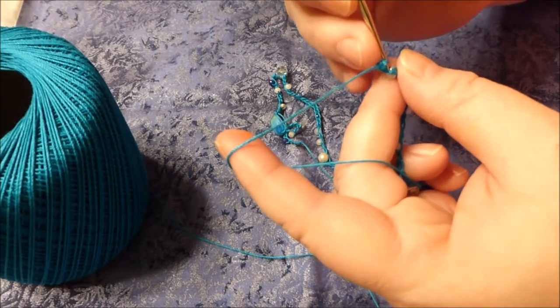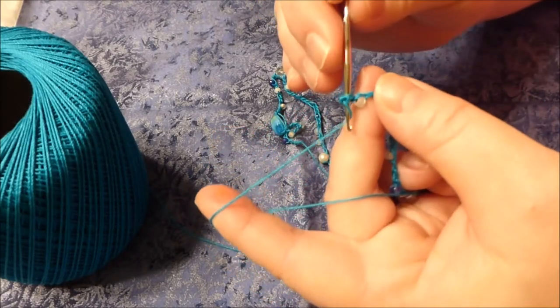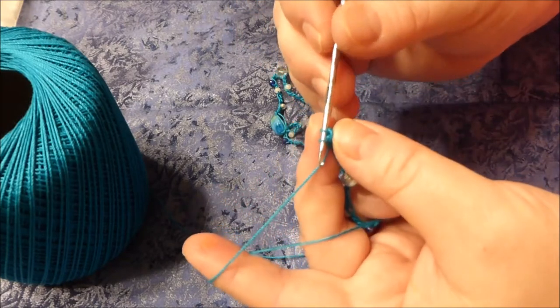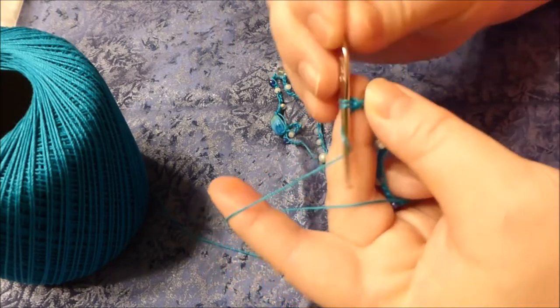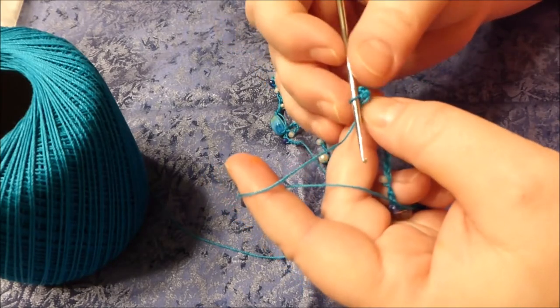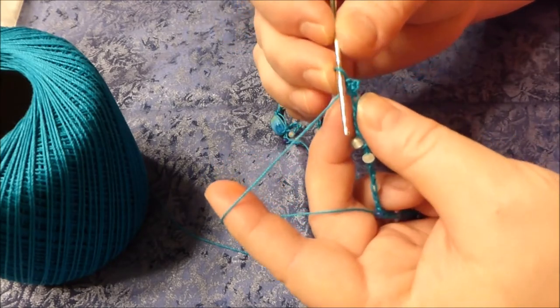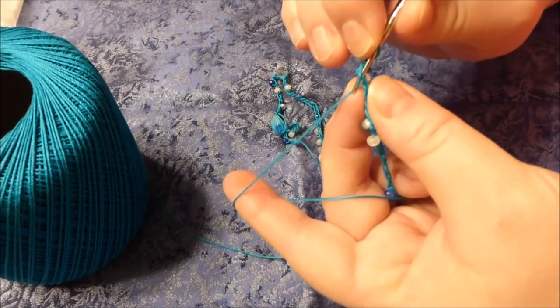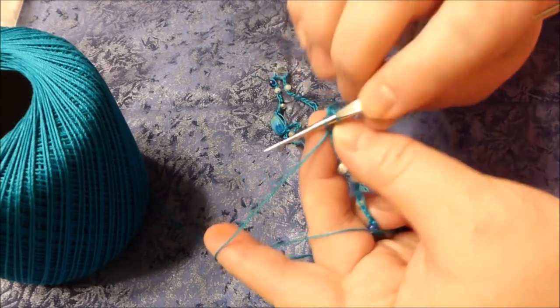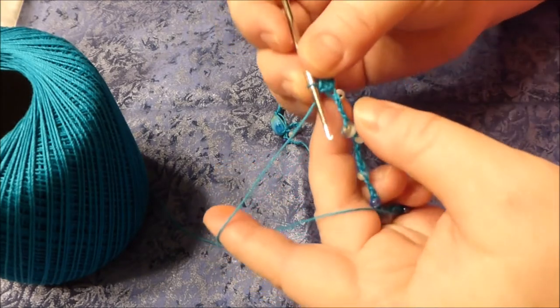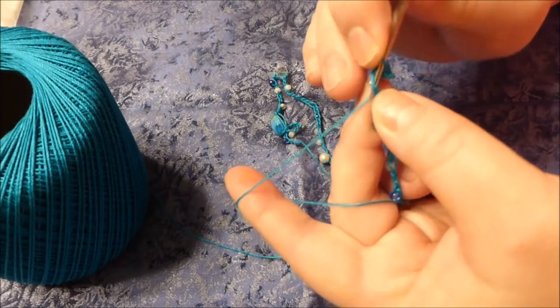Insert my hook into the one little loop right there. Grab a loop. Pull it through. There's two loops on my hook. Grab one more loop. Pull it through. That's going to be my single chain. I'm going to do this all the way across. So in the very next loop right here, I'm going to insert hook, pull through a chain, pull through the two loops. And I'm going to do that all the way across.